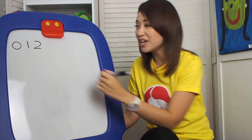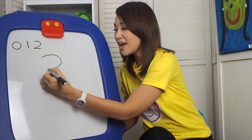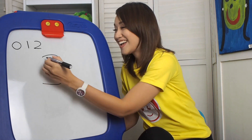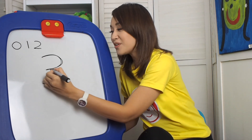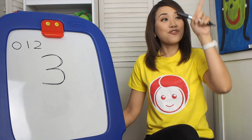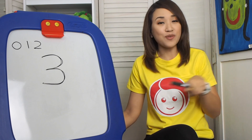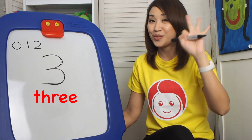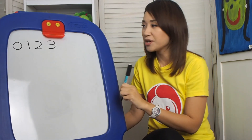What is after number two? Great job — number three. So how do we write number three? Halfway round and halfway round to make the number three.